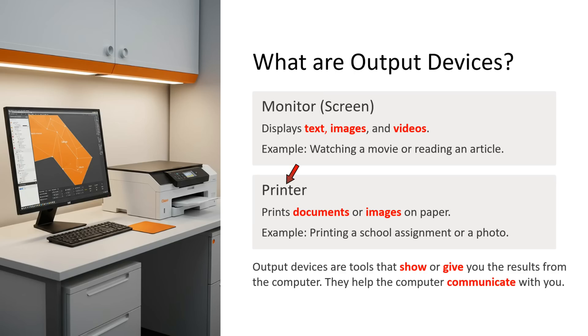The next output device is the printer. The printer prints documents or images on paper. For example, printing a school assignment or photo.